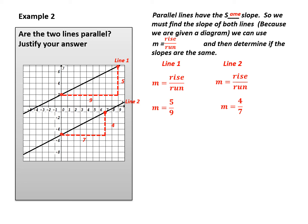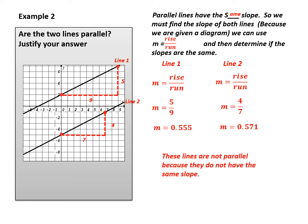Because these fractions have different denominators, it is quite difficult to tell if they are the same slope. We could create equivalent fractions, or we could convert to decimals: 5 divided by 9 is 0.555, and 4 divided by 7 is 0.571. These are very close, which is probably why we can't tell visually if they are parallel or not. However, there is a difference, and it is not caused by rounding. Therefore, these are not parallel lines because they don't have the same slope.